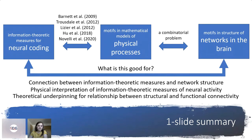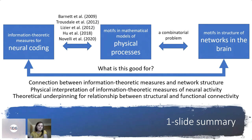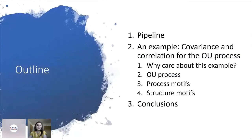Establishing a connection between information-theoretic measures and network structure yields a physical interpretation of those measures. With these interpretations, we can ask what network structures are especially good or bad for maximizing or minimizing a quantity of interest. Measures of dependencies between variables are what we use to measure functional connectivity, and I'll spend considerable time on the simplest measure — covariance and correlation — connecting network structure to these measures yields a theoretical underpinning for the relationship between structural and functional connectivity.